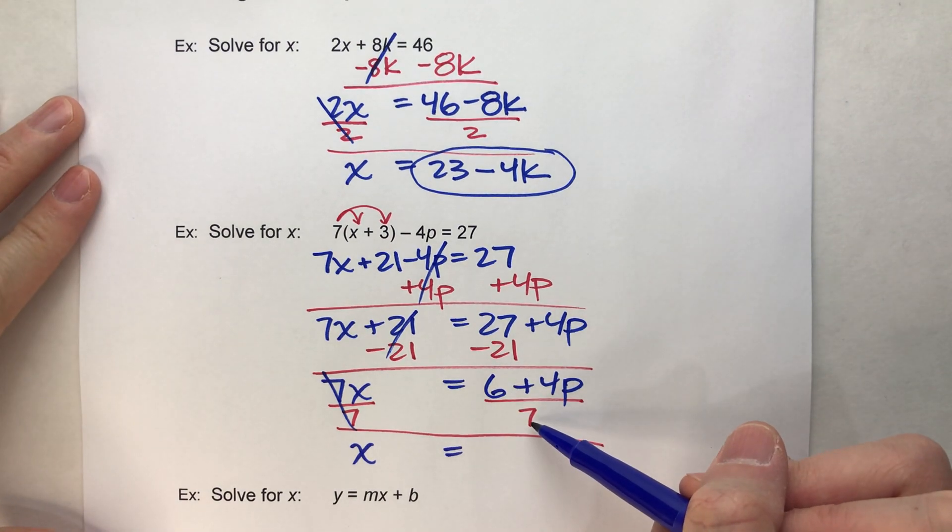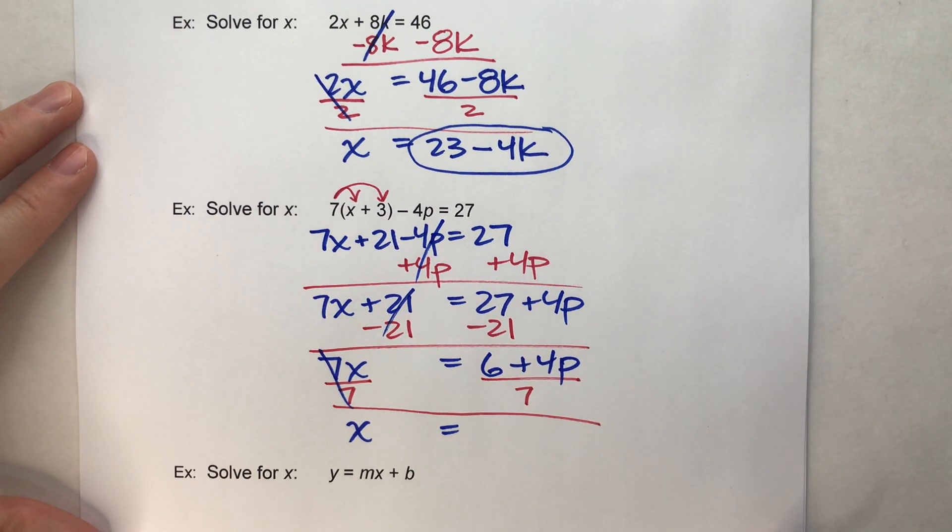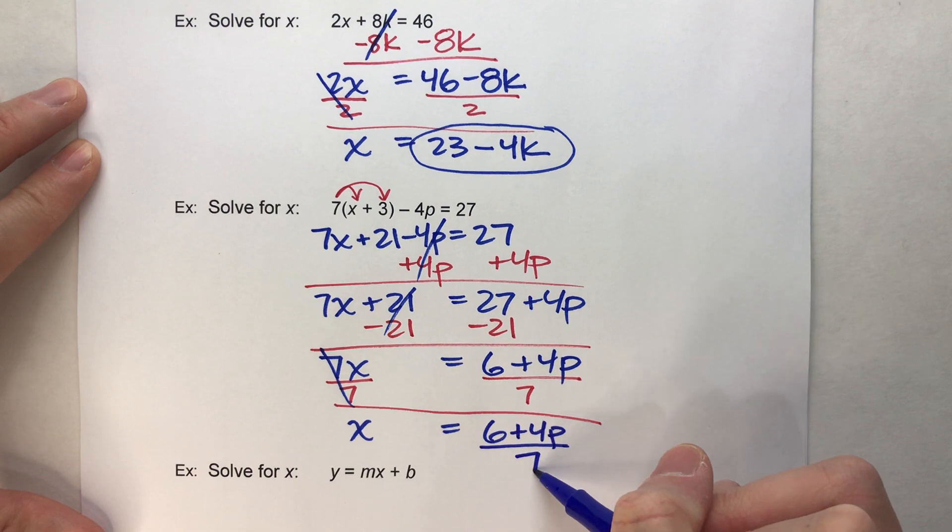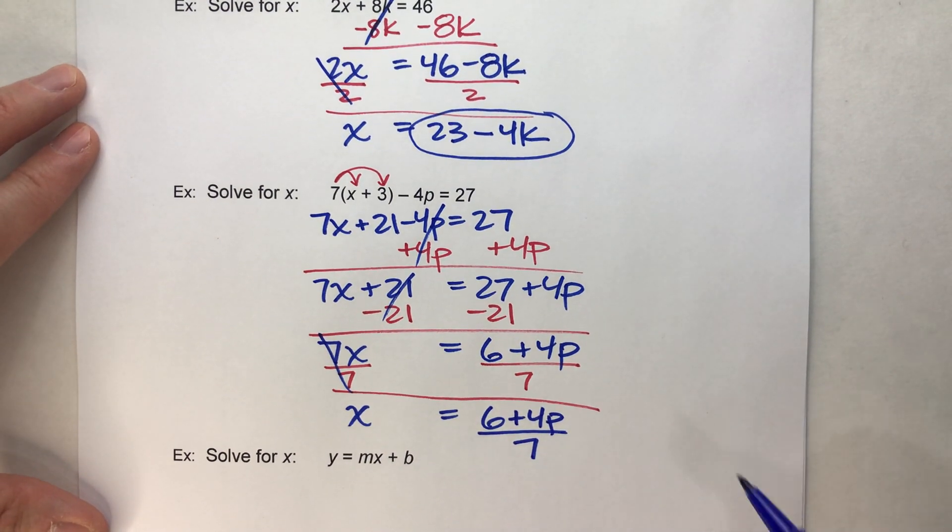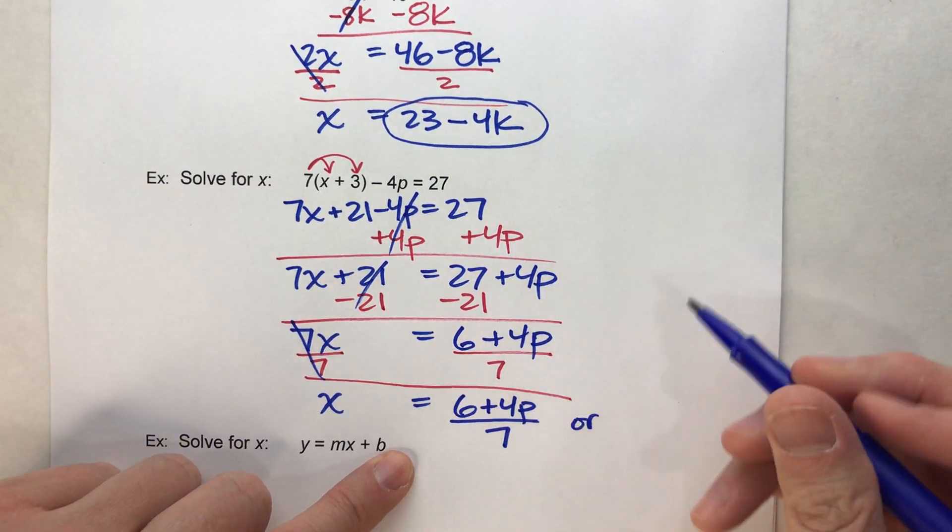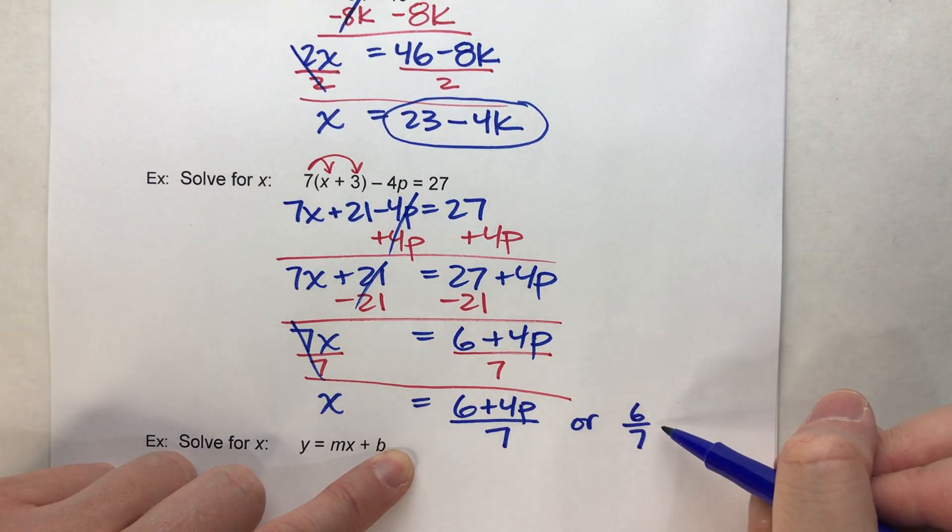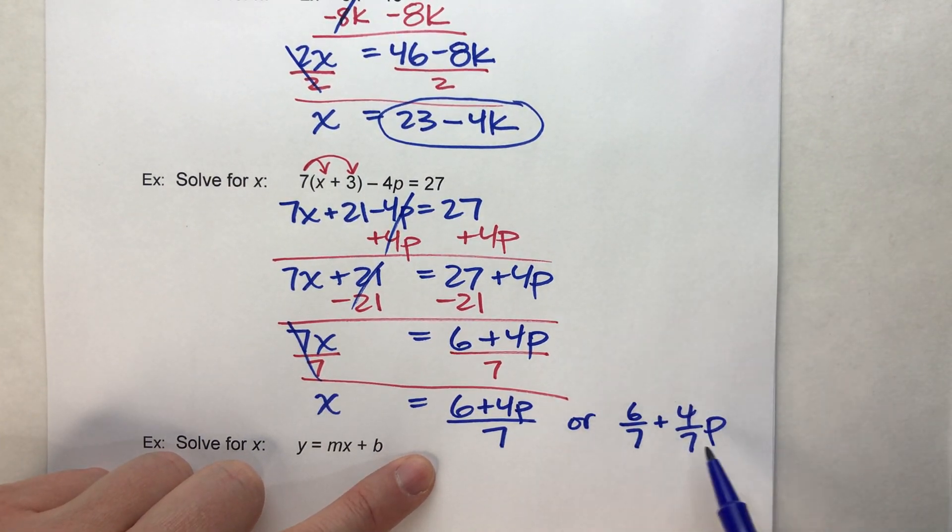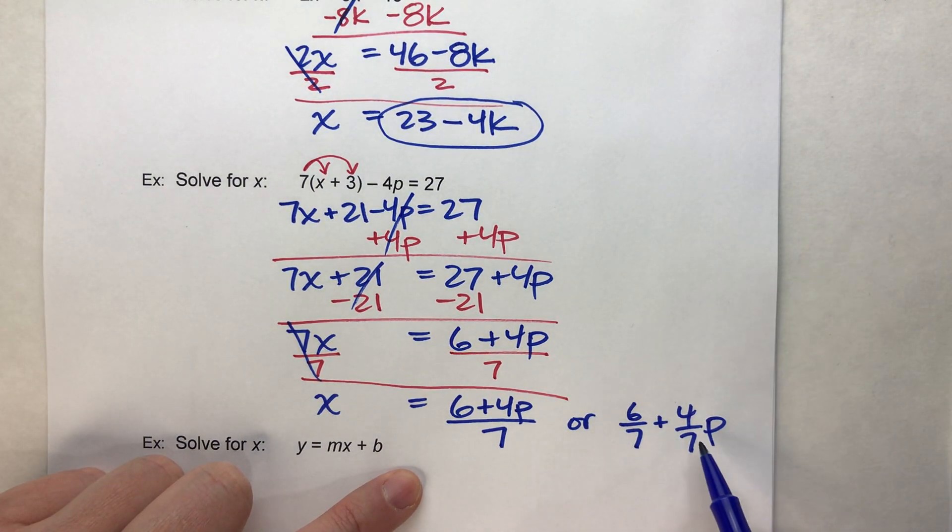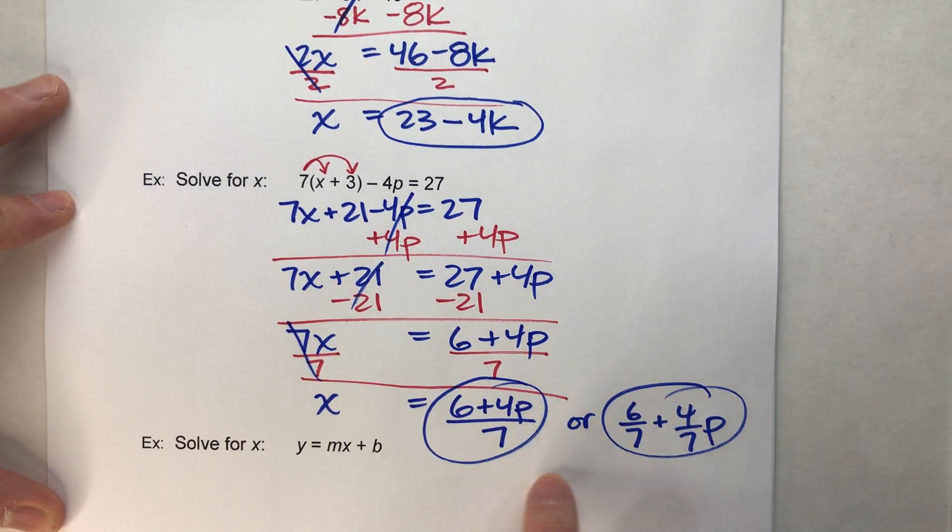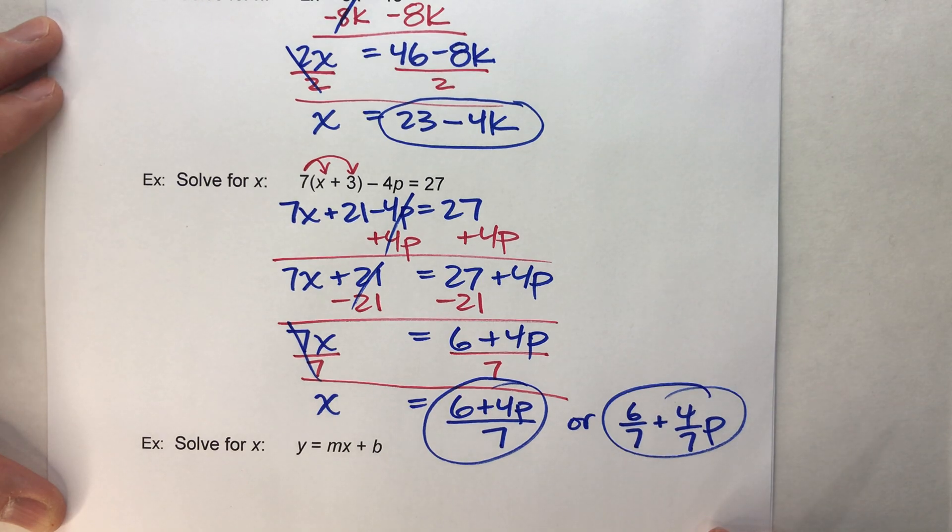And notice, I can't really do 6 divided by 7, and I can't do 4 divided by 7. So, depending on how your teacher wants you to do this, you could just leave it as 6 plus 4p divided by 7. Or, if your teacher really wants you to divide each of those terms by 7, you could say 6 divided by 7 is 6 sevenths plus 4p divided by 7 is 4 sevenths p. I don't know that one is more simplified than the other. I personally don't mind this, but if you really want to write it that way, you can. They're equivalent. It's just, which one is more simplified, it depends on your preference.